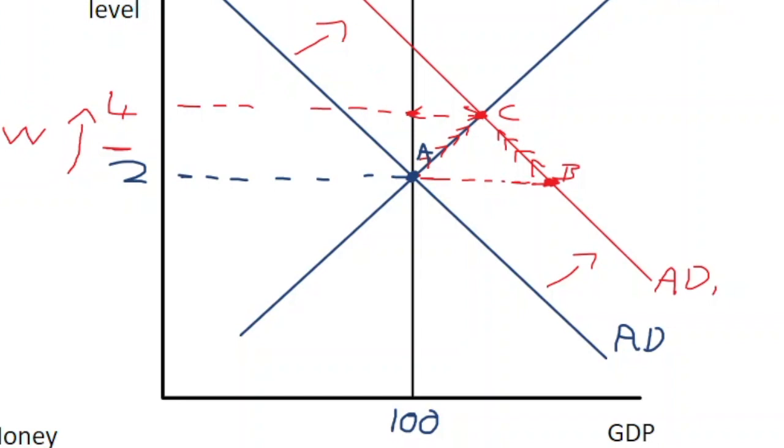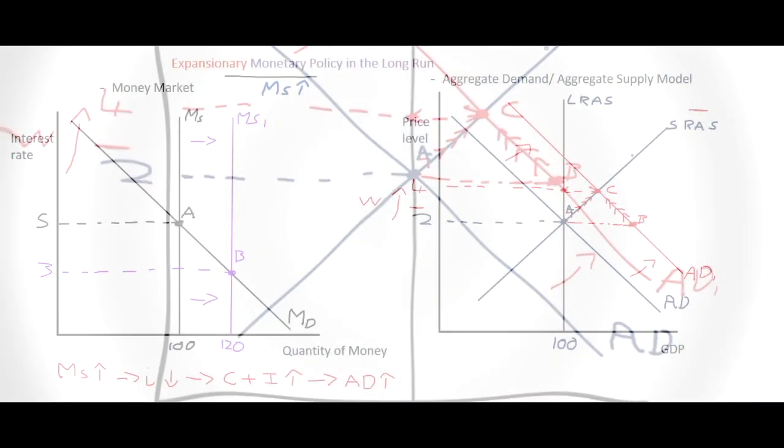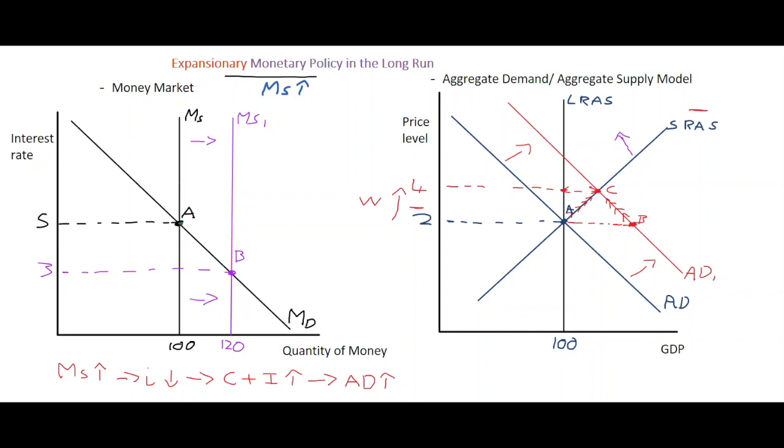So if prices increase and this pushes up the wage level in the economy, this can have a negative impact on short-run supply. And if it has a negative impact on short-run supply, what we see is the short-run supply curve will tend to shift backwards to the left.